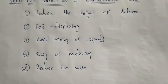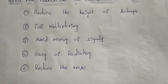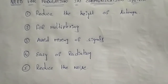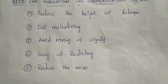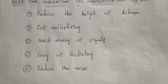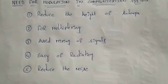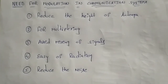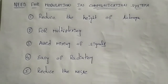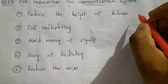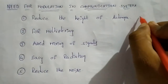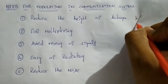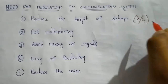The height of the antenna must be sufficient to radiate the signal. The minimum height required for efficient radiation is lambda by 4, where lambda is the wavelength.